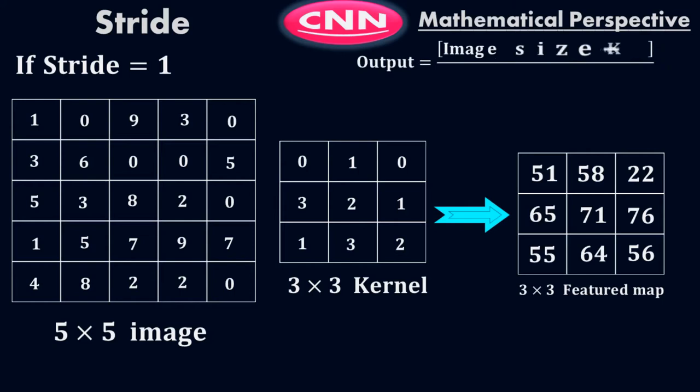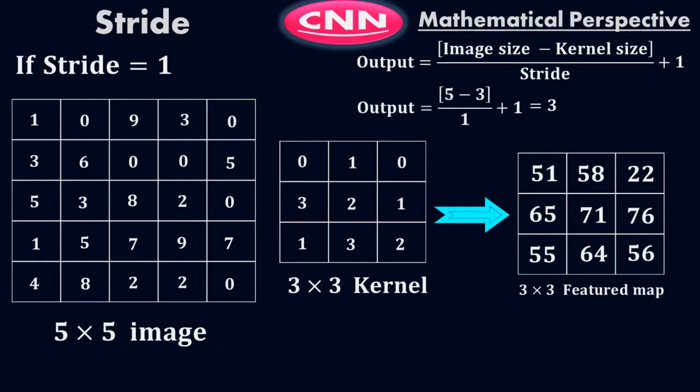There is a mathematical formula here: output = (image_size - kernel_size) / stride + 1, which equals (5 - 3) / 1 + 1 = 3. So this means we got a 3x3 feature map. If you take a 3x3 kernel on a 5x5 input image with stride equals 1, your feature map will be 3x3. There is a mathematical formula so you can easily know what the dimension of the feature map will be.